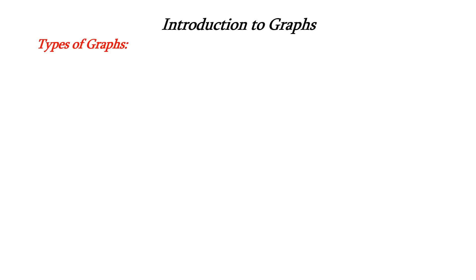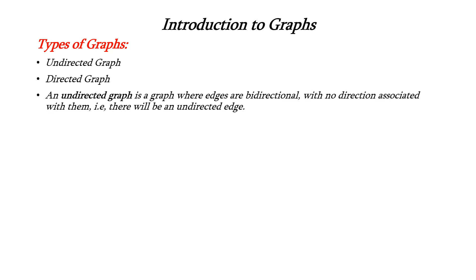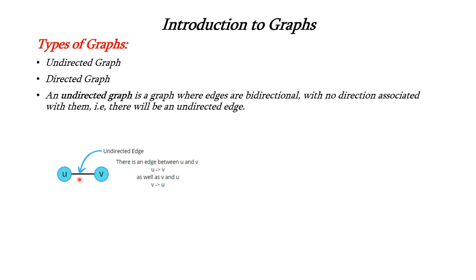Next is the types of graphs. We can categorize graphs into two types: one is undirected graph and another one is directed graph. An undirected graph contains bidirectional edges — that is, no direction is associated with them. It will have an undirected edge. We can see the example of an undirected edge here: we have two vertices U and V with a line connecting them but no direction.